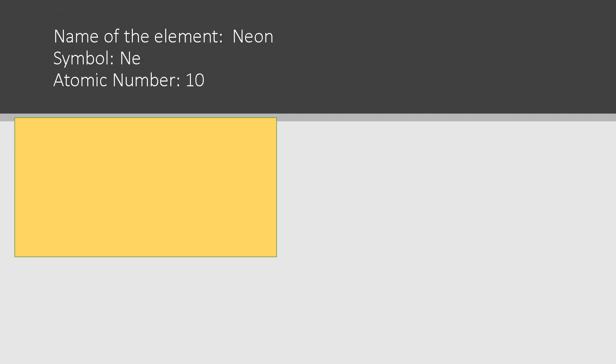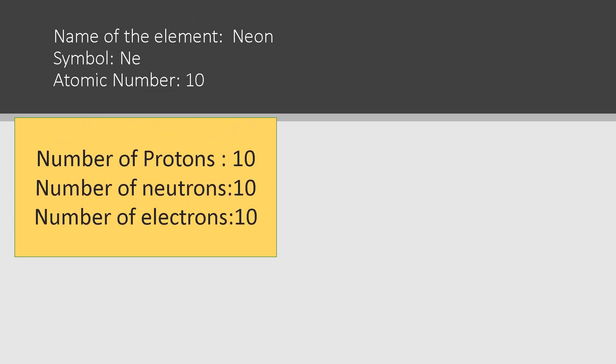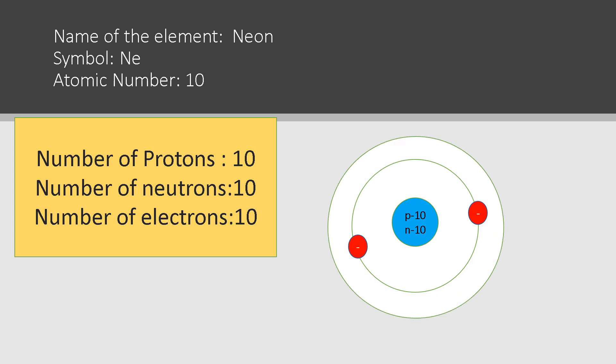Neon: symbol Ne, atomic number ten. The outermost shell of neon has eight electrons — it has a complete octet. Thus neon does not gain, lose, or share electrons. The valency of neon is zero, and it is known as zero valent.